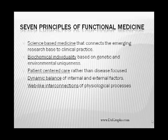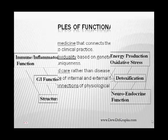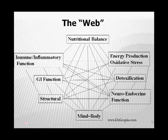Web-like interconnections of physiological processes — this simply says that what my liver does affects my digestion, what my digestion does affects my brain, what my brain does affects my heart, and what's going on structurally affects my nerves. This is evidenced by a diagram called the web, or the functional medicine matrix, which shows the interactions between all the different systems, functions, and organs in the body. None of your organ systems work in a vacuum — they all interconnect and interact with each other.